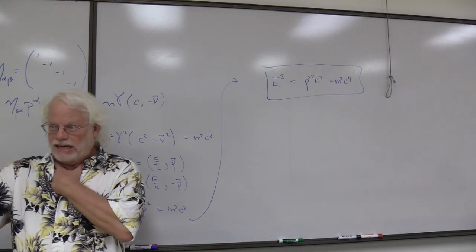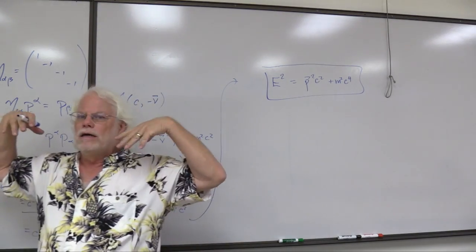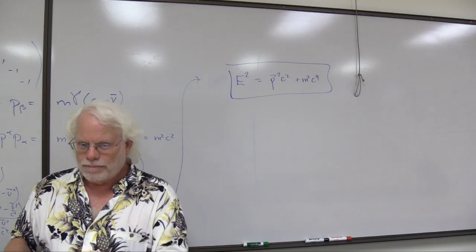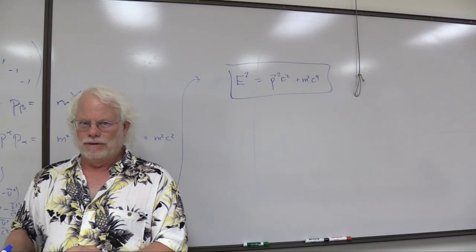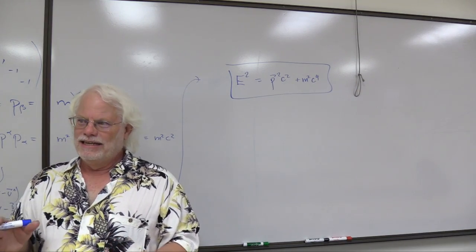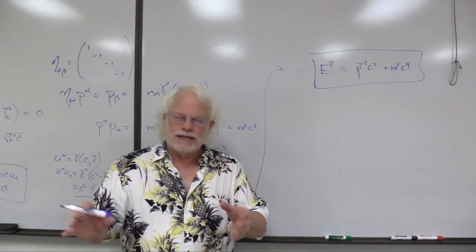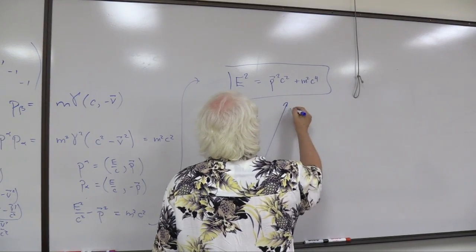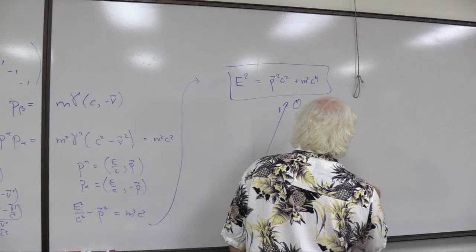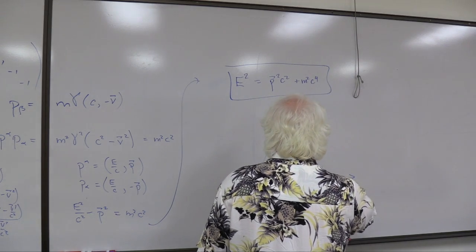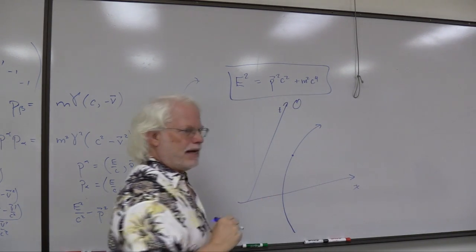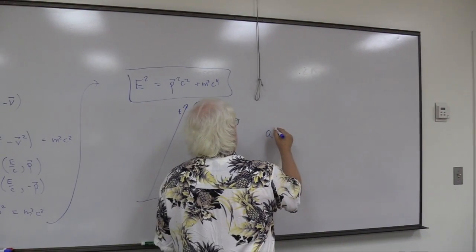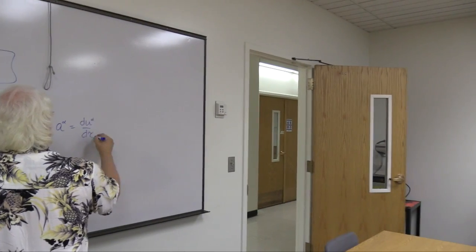Here's a problem for next time. A particle undergoing constant acceleration — this is a good exercise in using four-vectors. Think about it as a four-dimensional vector problem, write right-invariant four-vector quantities, and you can integrate using proper time tau without ever going into a particular frame. We have some inertial frame and a particle that undergoes constant acceleration. By that I mean in the instantaneous rest frame of the particle, I can write the four-acceleration as d(u^alpha)/d(tau).